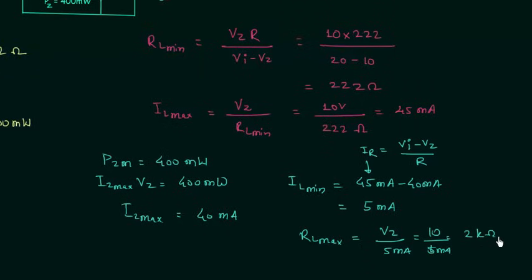2 kilohms — this is the answer. I hope you now know how to deal with varying load resistance and fixed input voltage. If you have any doubts you may ask in the comment section. I will end this lecture here, see you in the next one.